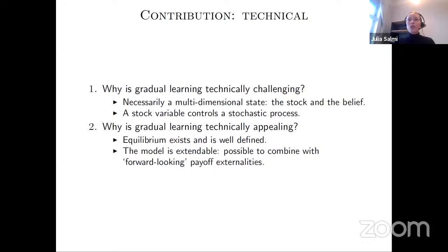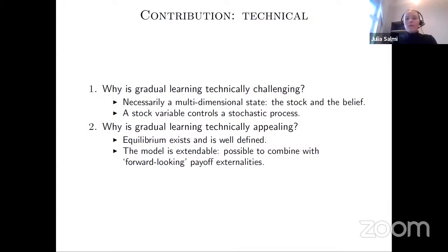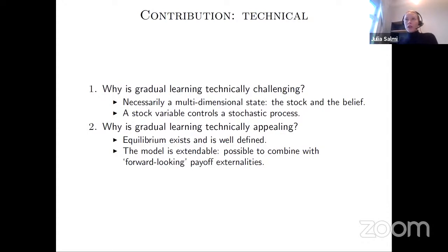Let me remind you of the technical dimensions. Gradual learning is technically challenging because we need to solve a multidimensional problem — both the stock of players who have stopped and the current belief affect the future, and those two dimensions are linked. The stock controls the belief process. However, once we overcome these difficulties, an equilibrium exists and is well defined. The model is smooth enough because of the gradual arrival of information, in contrast to instantaneous feedback models.